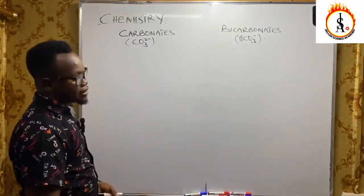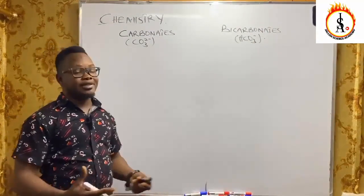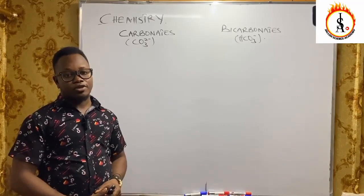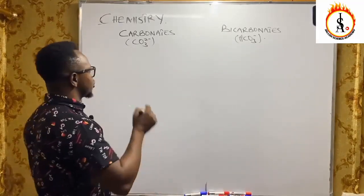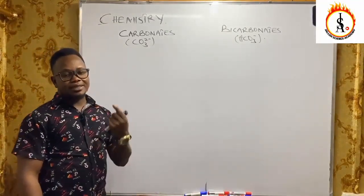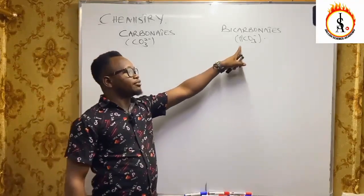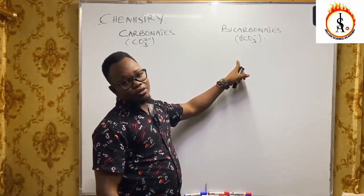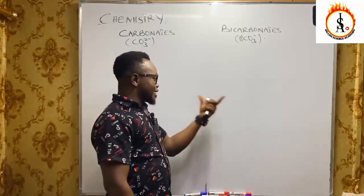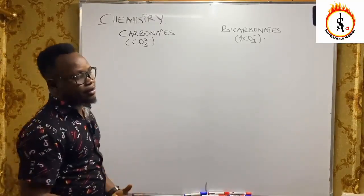Now to separate carbonates from bicarbonates we are going to use the reagent calcium chloride. With calcium chloride, if we use it on carbonate we will precipitate calcium carbonates directly. But if we react bicarbonate and calcium chloride, we won't be able to precipitate calcium carbonate except we have to heat the product.